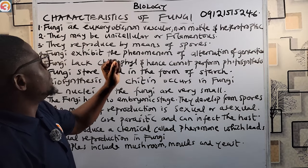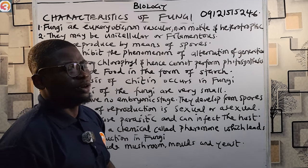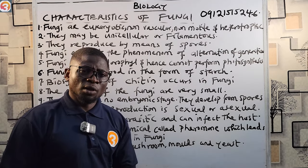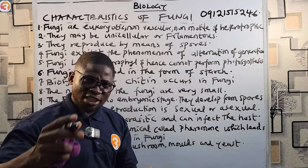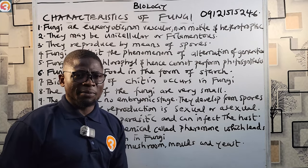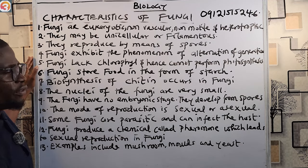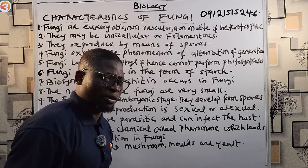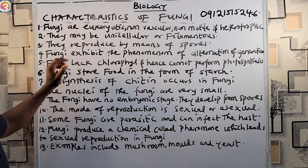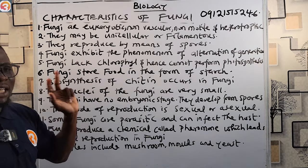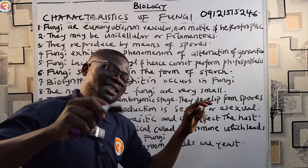They do not incubate them — there is no embryonic stage. So they just release them to the environment for them to thrive. Number seven: fungi show the phenomenon of alternation of generation. That means the stages in their life cycle alternate between sexual reproduction and asexual reproduction and so on. Number eight: fungi lack chlorophyll and hence cannot perform photosynthesis like plants do.